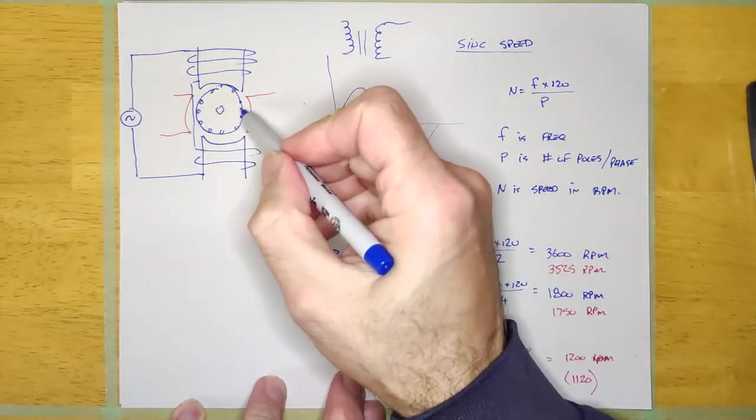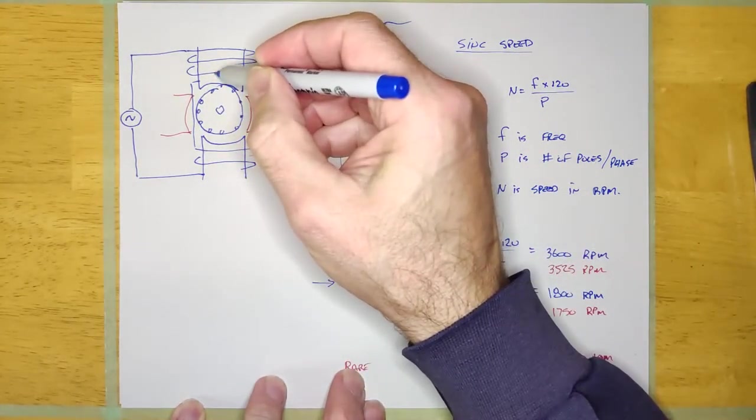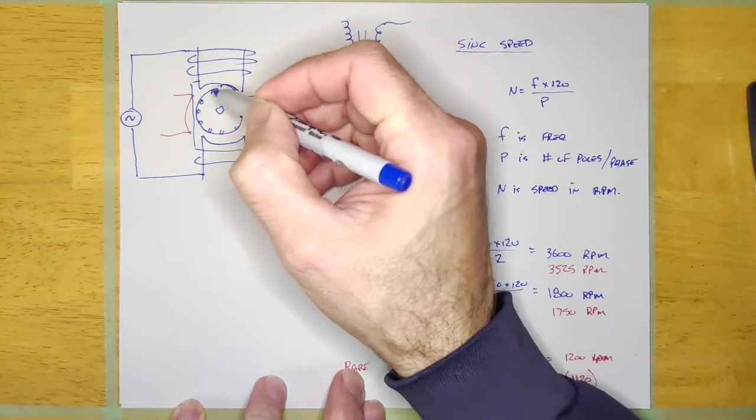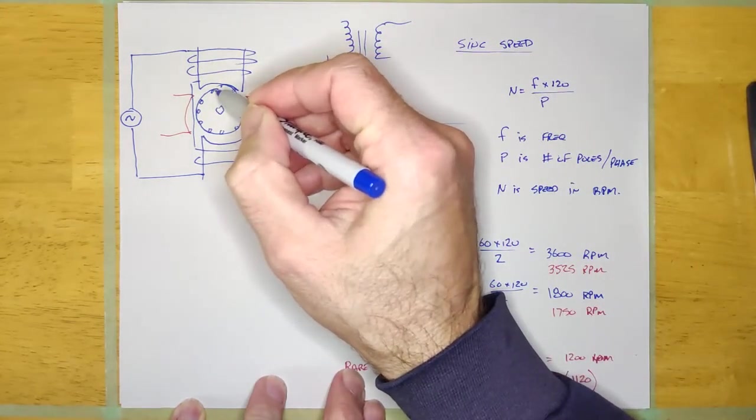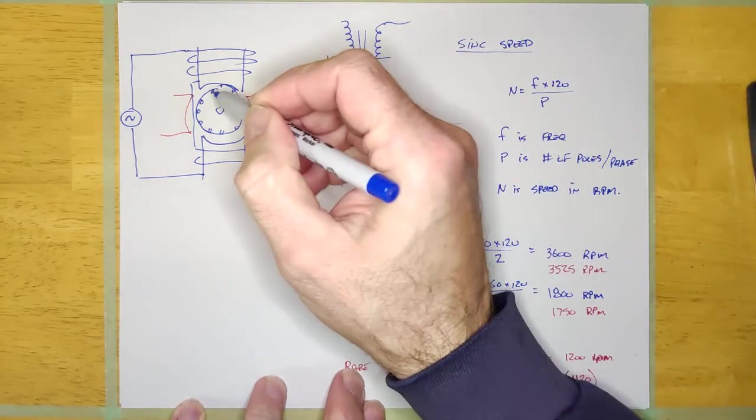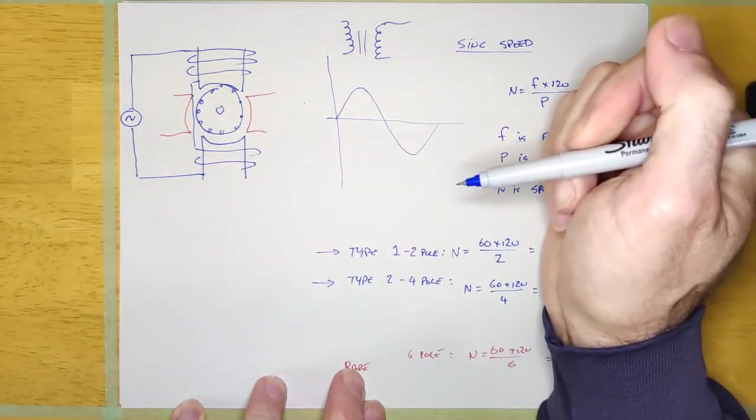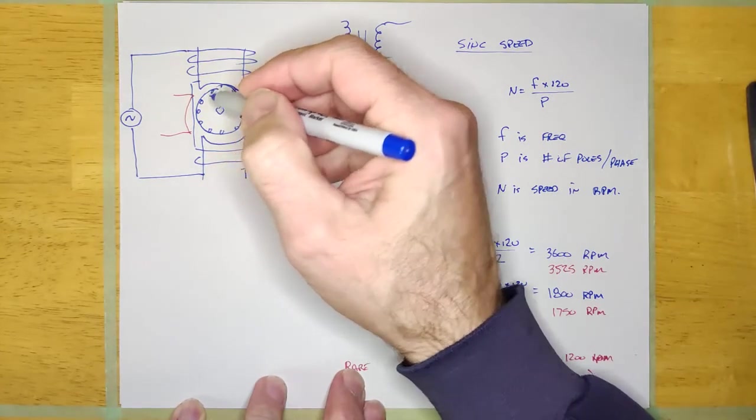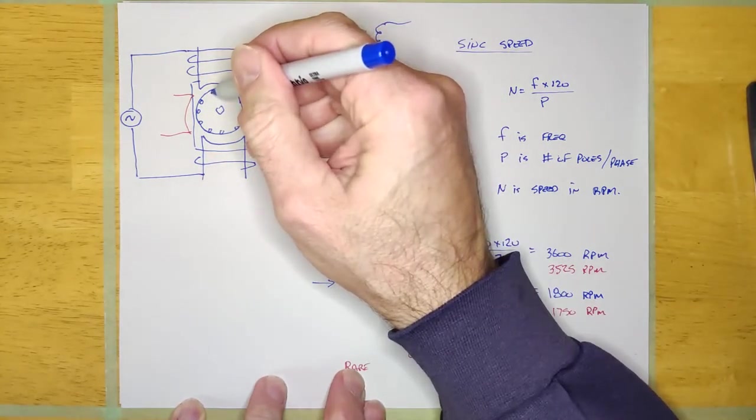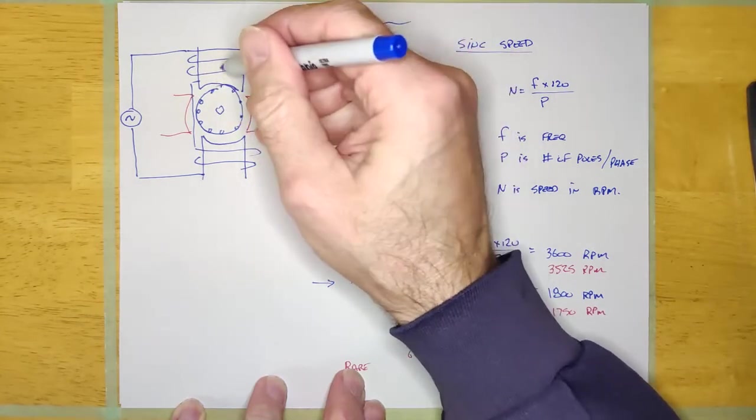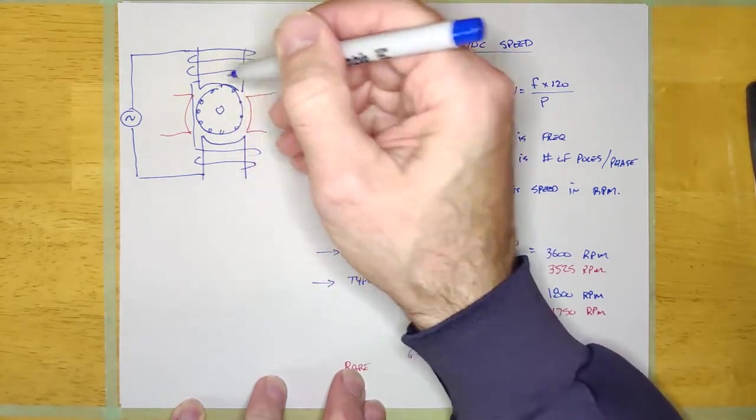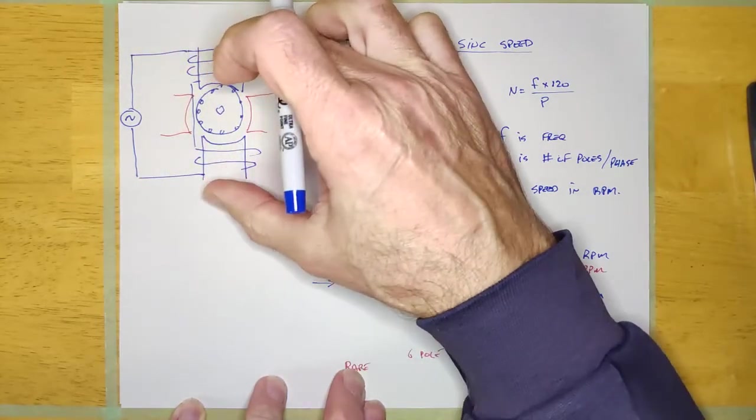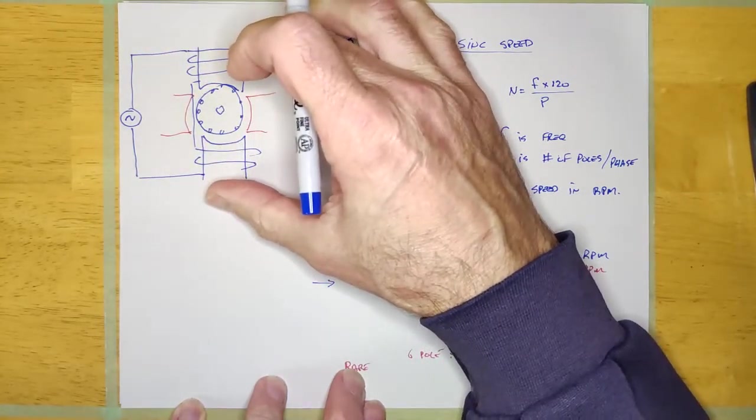Now it's going to slow down, and that means that the difference between the sync speed and the actual speed is up, which means more of the flux is crossing these bars, which means more voltage induced to those bars, which means more current flowing into those bars. And when you get an increase in current in these bars, you are going to get a corresponding increase in current in the stator winding.